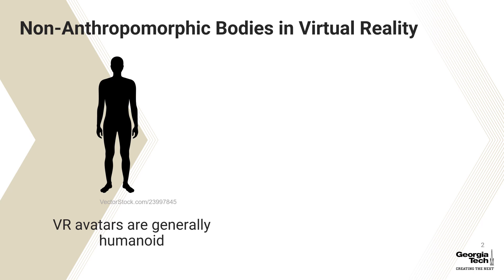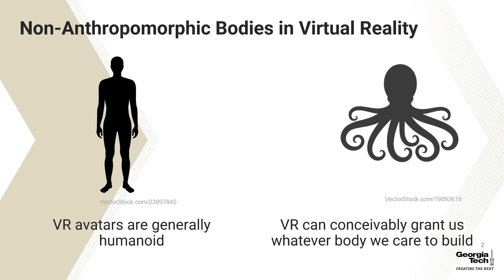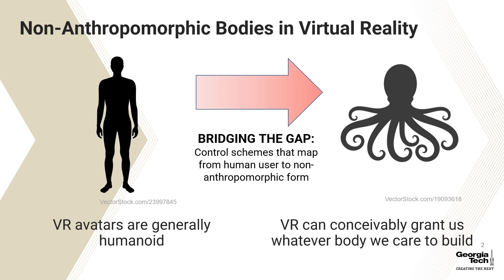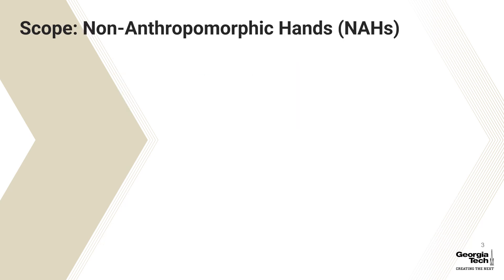Mapping a user's body onto a non-anthropomorphic body shape is not a trivial problem, particularly true for bodies that have more degrees of freedom than the human body. In order to fully utilize the variety of experiences that virtual reality can potentially offer, we need a way to generate control schemes that map human shapes onto non-anthropomorphic forms.